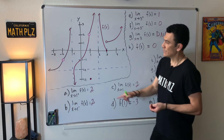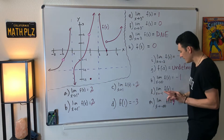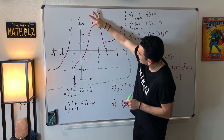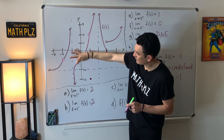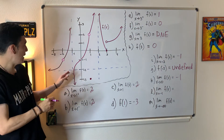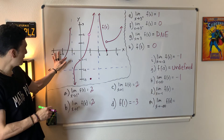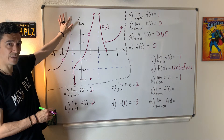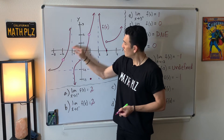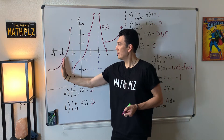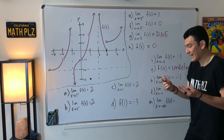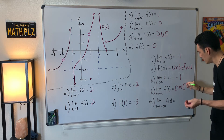Let's approach negative one — it doesn't say left or right, so we try both. Approaching negative one from the right, it goes down to negative infinity. Approaching negative one from the left, it goes up to positive infinity. One side goes down, the other goes up — they are not in agreement. So the limit does not exist.